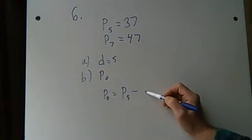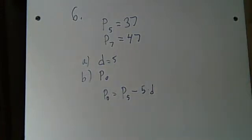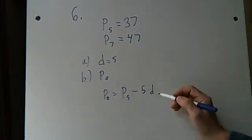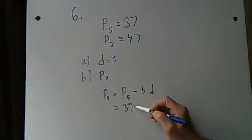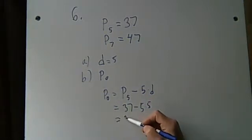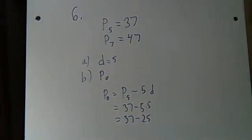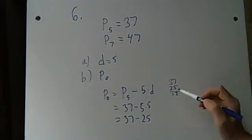It's gonna be P5 minus five times D. In other words, you have to go back. If you went back just one to P4, you'd only subtract five. But here you're gonna do five times. So that's gonna be 25. It's gonna be 37 minus 5 times 5. Or 37 minus 25. And that's gonna be 2, 1. It's gonna be 12.